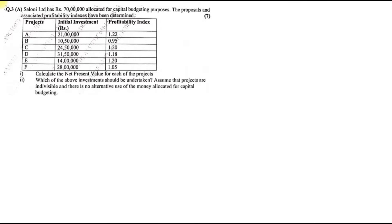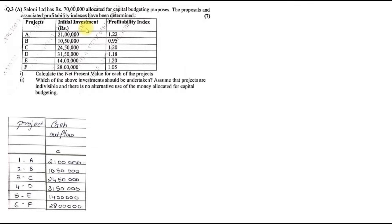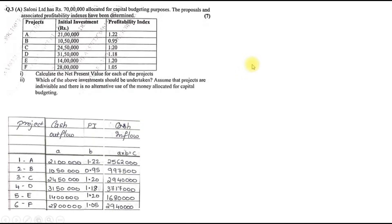This is a two-part question. First we find the NPV. In the table: first column is all projects, second is initial investments (cash outflow — the amount you spend), and third is profitability index (PI) from the question. Cash outflow is column A, PI is column B. Now we find cash inflow: cash outflow multiplied by profitability index gives cash inflow. So 21 lakh × 1.22, 10 lakh 50,000 × 0.95, and so on.